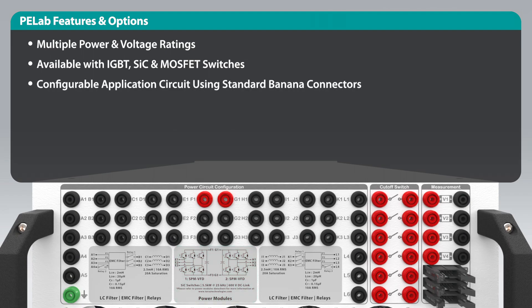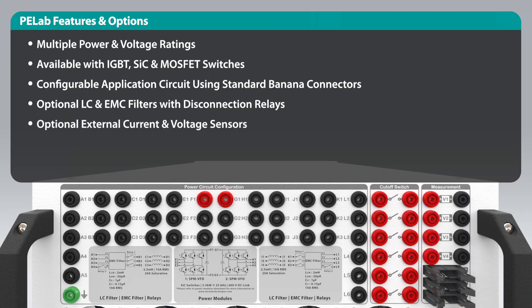From the back panel, you can configure your application circuit using the standard banana connectors. Optional LC filters, EMC filters, and disconnection relays add additional application flexibility and integration. If you need to measure external sources and loads such as the grid, external voltage and current sensors can be added to the back panel as well. A six-pole cutoff switch can safely disconnect your system from loads and sources.